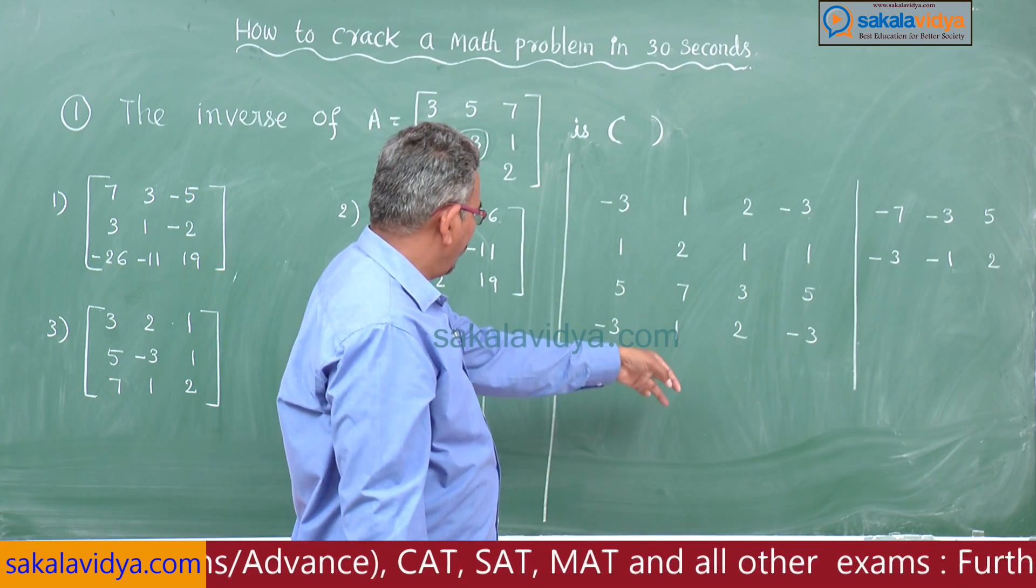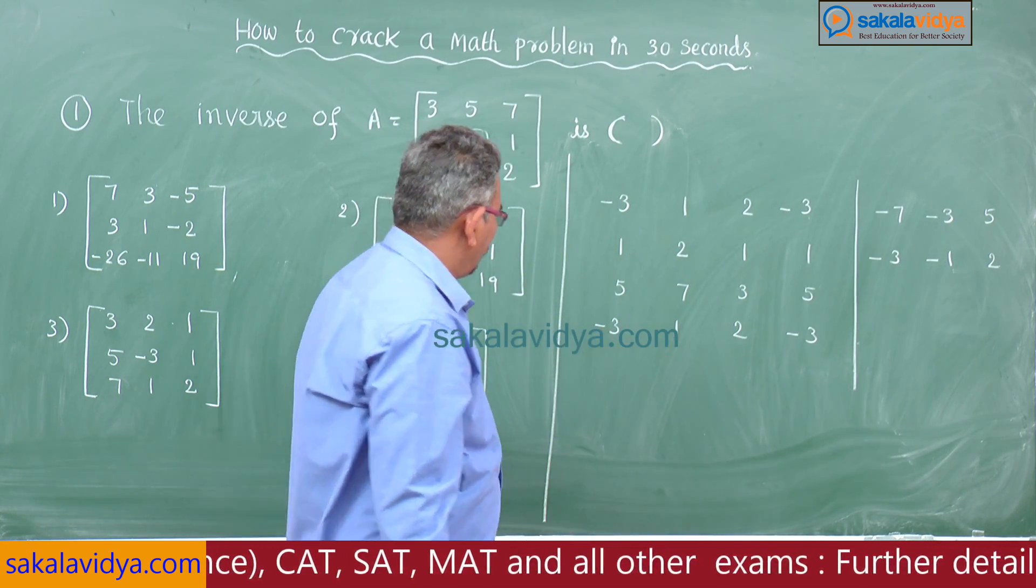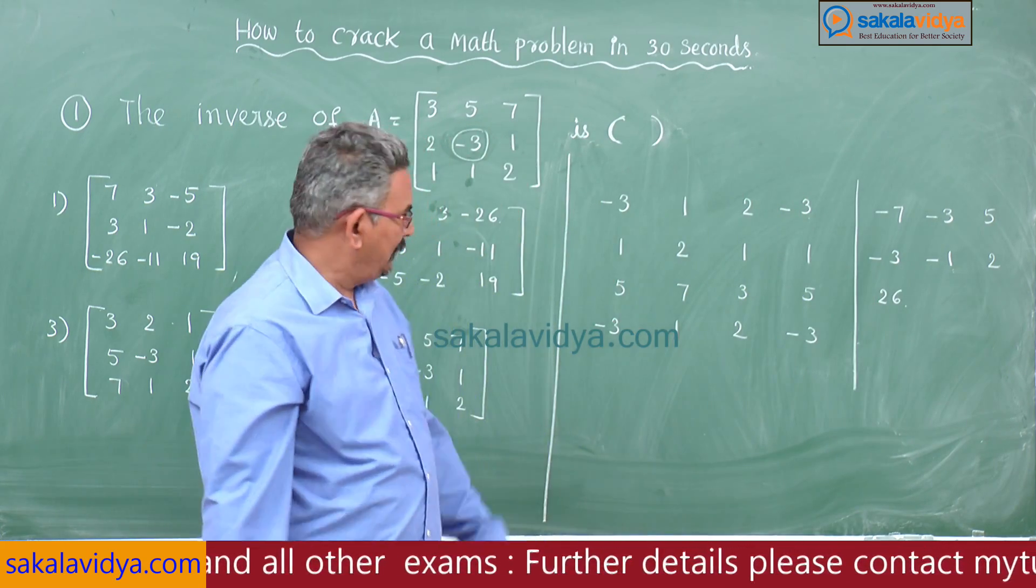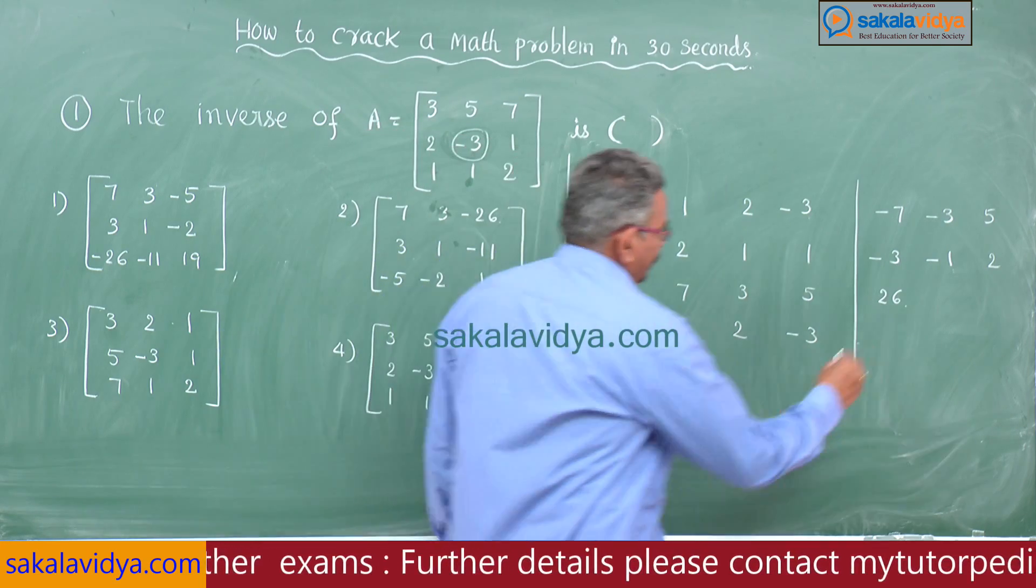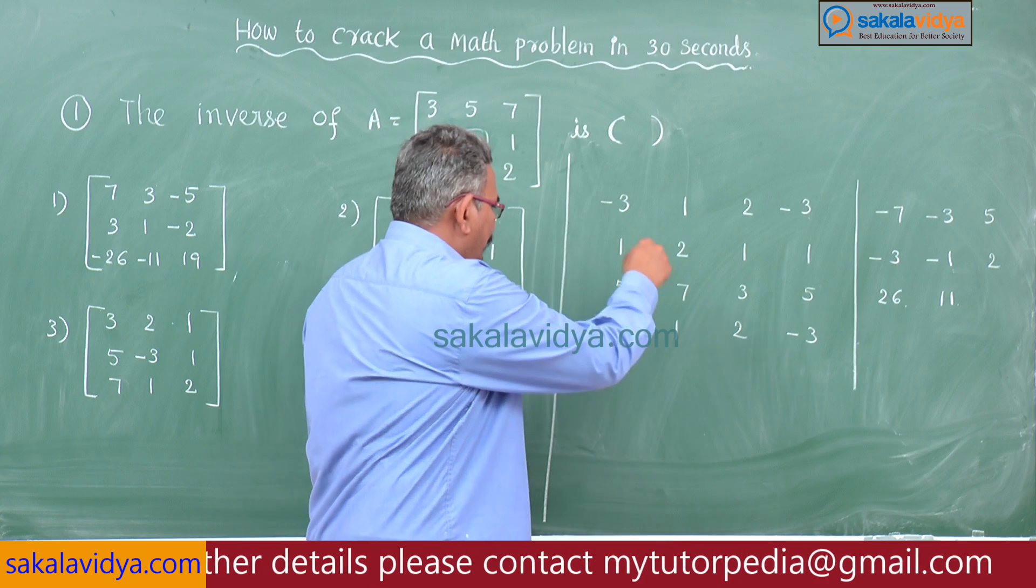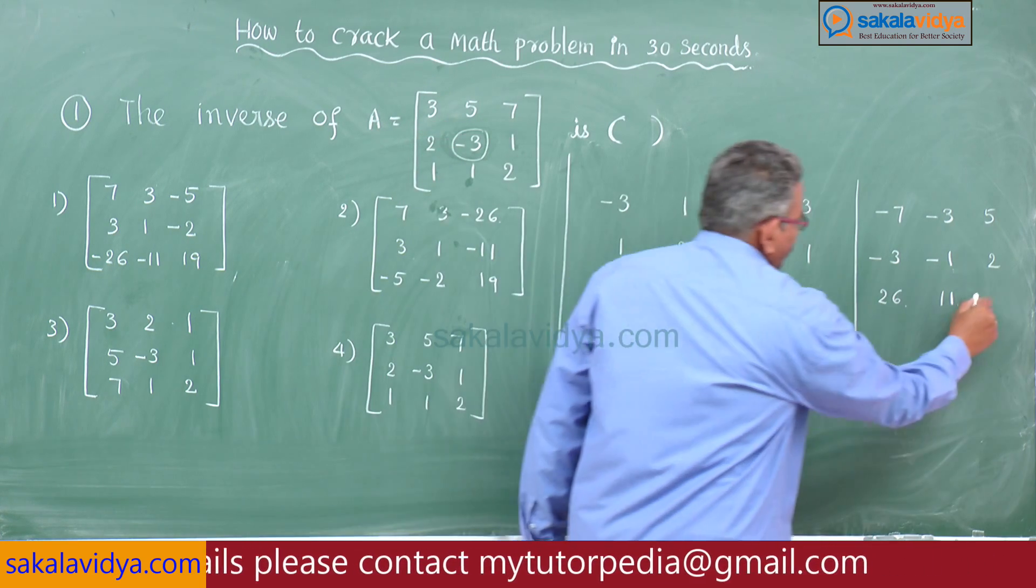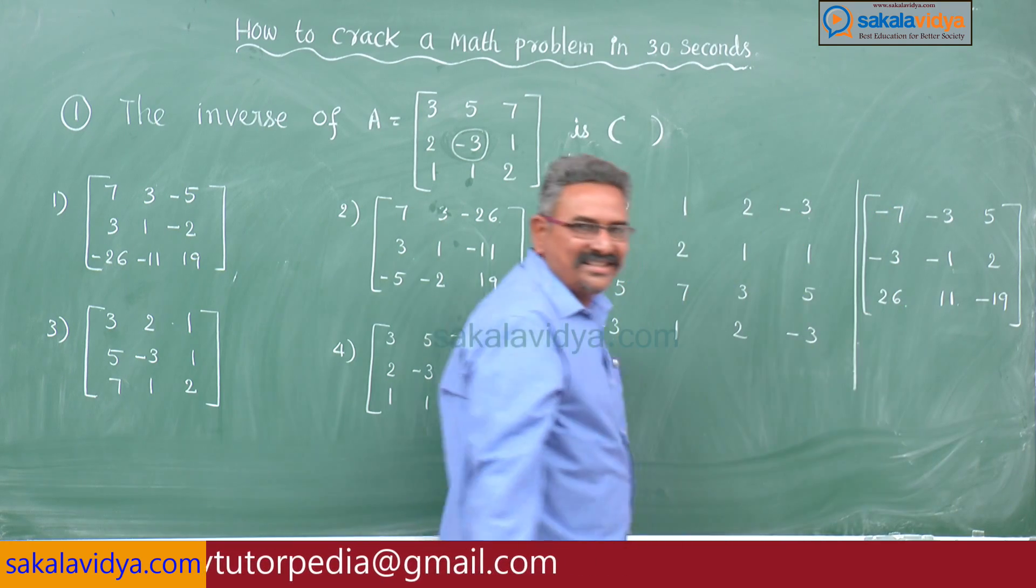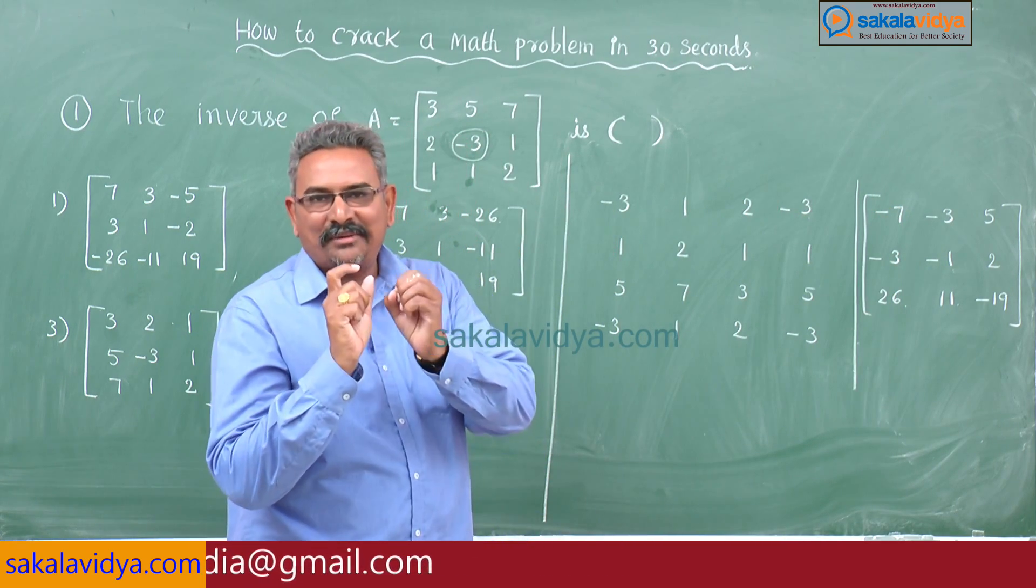Now 5 plus 21 is 26. I might be doing correctly. 14 minus 3 is 11. You have to practice speed. That is -9 minus 10 is -19. Now put the bracket. Do you know what does it represent? It is nothing but cofactor matrix.